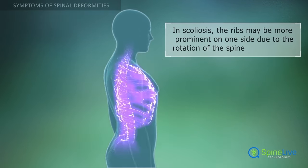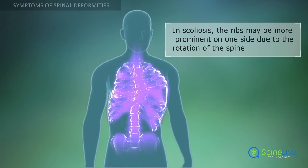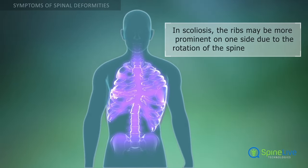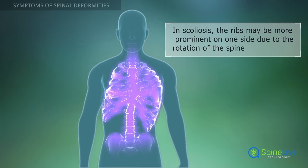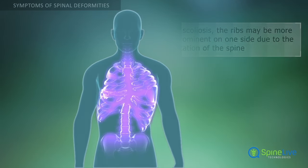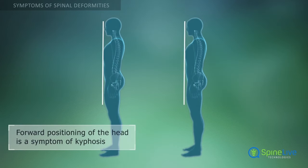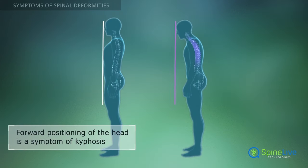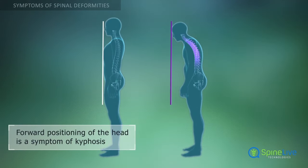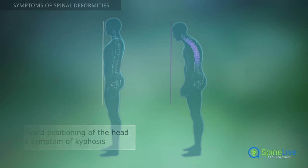For example, in scoliosis the ribs may be more prominent on one side due to the rotation of the spine from its usual position. Kyphosis deformity of the spine and immobility of the thoracic region can cause forward positioning of the head compared to the rest of the body.